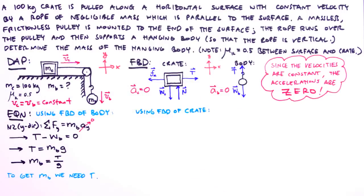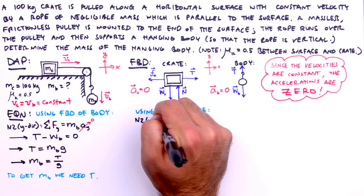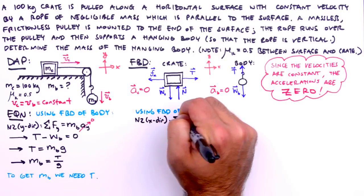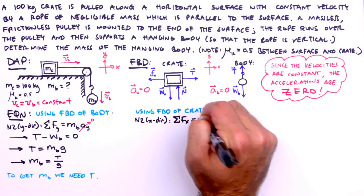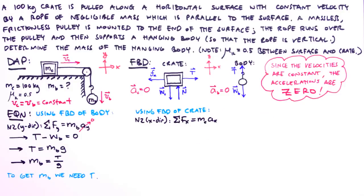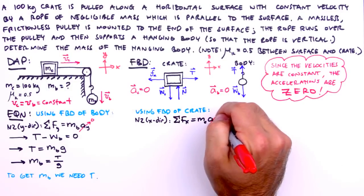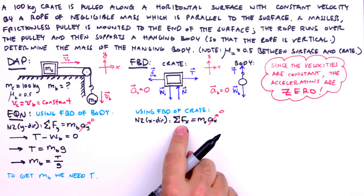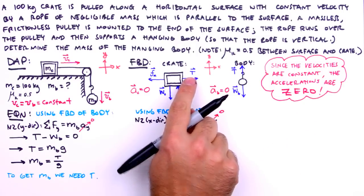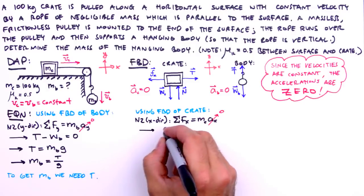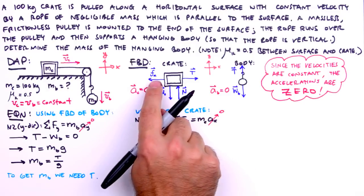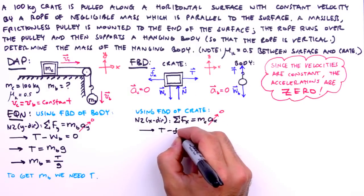Using the FBD of the crate and applying n2 in the x direction yields the sum of the forces in the x direction equals the mass of the crate times the acceleration of the crate in the x direction. Again, we know the acceleration is zero, so we write that here and proceed to sum the forces in the x direction. In the positive x direction, we have the tension force. And in the negative x direction, we have the friction force equals zero.